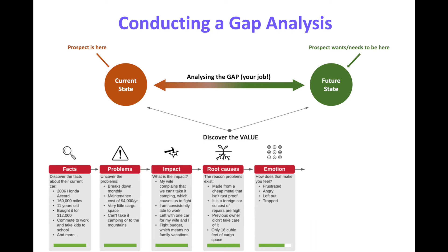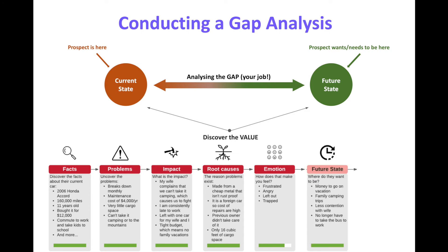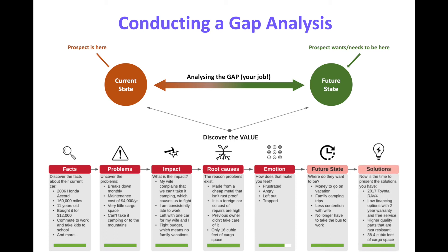The great salespeople also do this: they start turning problems into emotions and understanding the emotions affecting those problems — how it makes the prospect feel frustrated, angry, left out, trapped. Then they examine the future state: where does the prospect want to be? They want money to go on vacation, they want to take the family on camping trips, less contention with the wife, and they don't have to take the bus anymore. Then lastly, they bring the solution in. Most salespeople are good at facts and uncovering some problems, but they don't talk enough about impact, root causes, or the emotions involved. We often jump straight from facts to solution, missing five really important steps in that process.